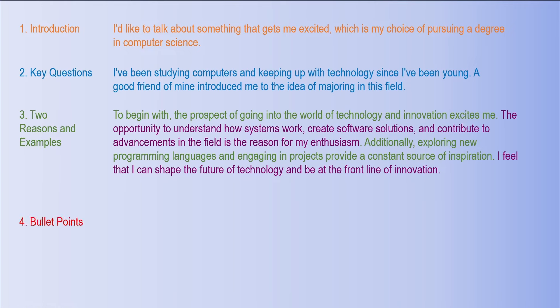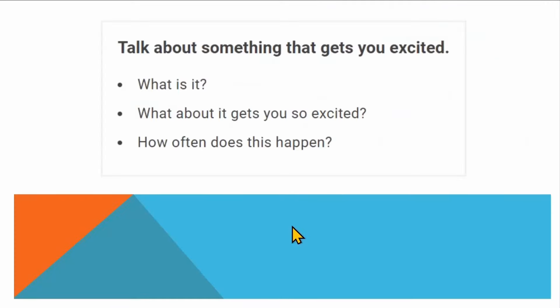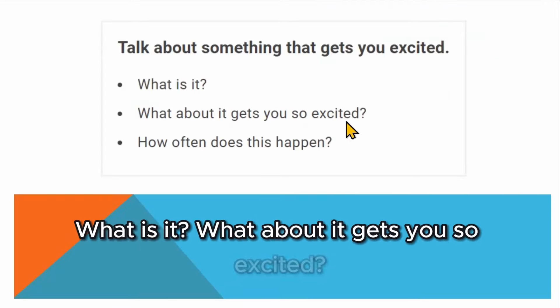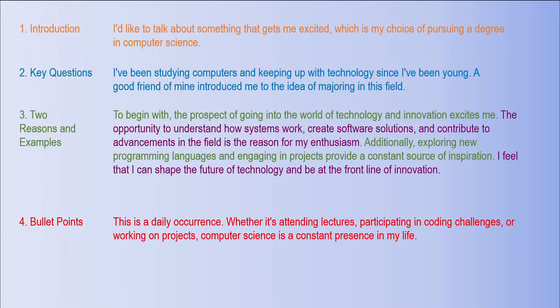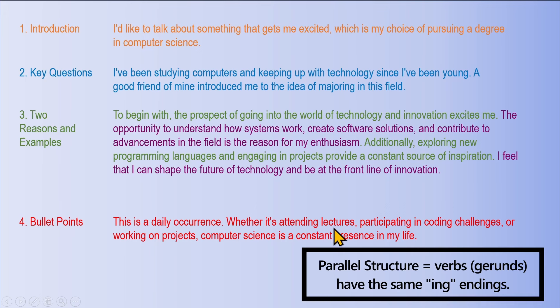Step four — the bullet points: what is it, what about it gets you so excited, how often does this happen? 'This is a daily occurrence. Whether it's attending lectures, participating in coding challenges, or working on projects, computer science is a constant presence in my life.' Notice that when listing points we use parallel structure: attending, participating, working — all ending in -ING. Walking to the store, eating at a restaurant, visiting my friend — if you're making lists like that, make sure you're using the same grammatical structure throughout.